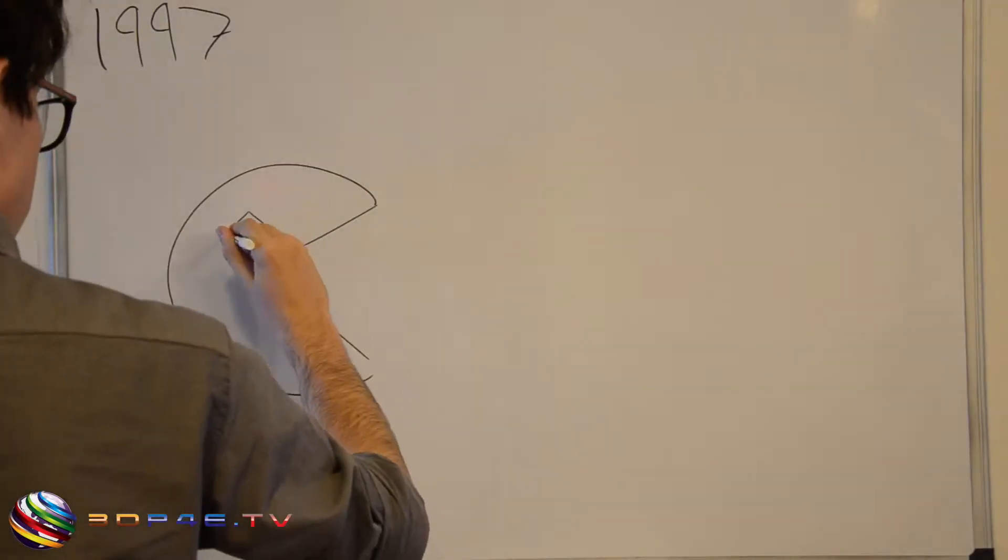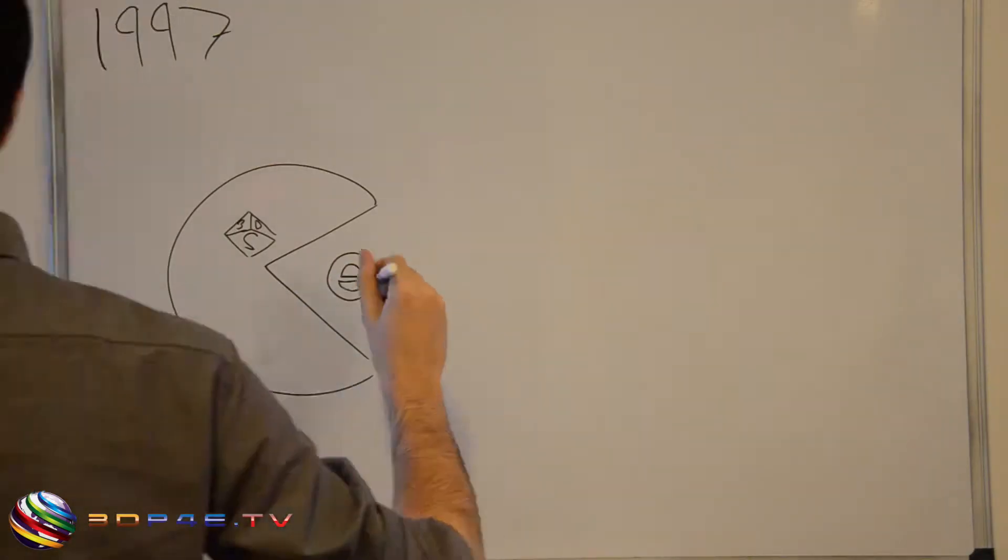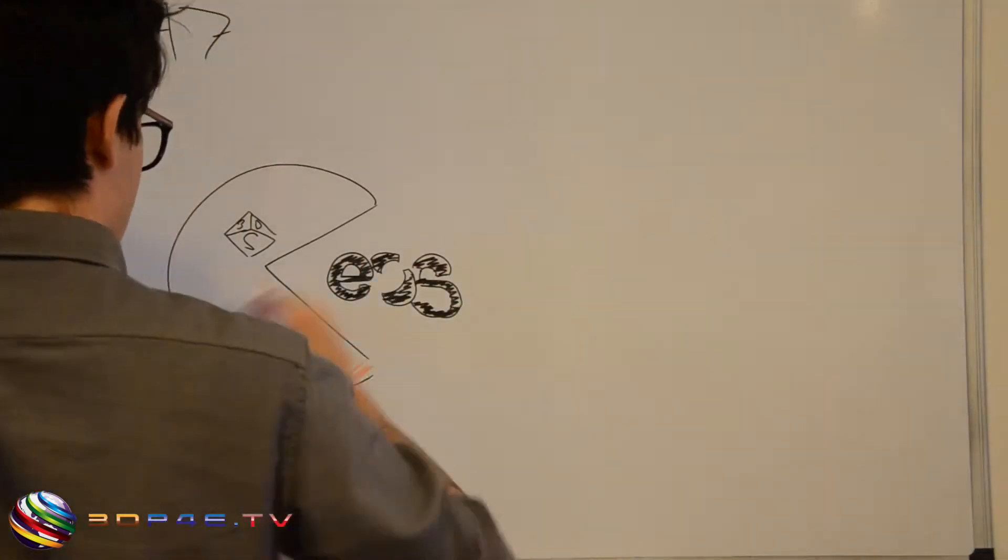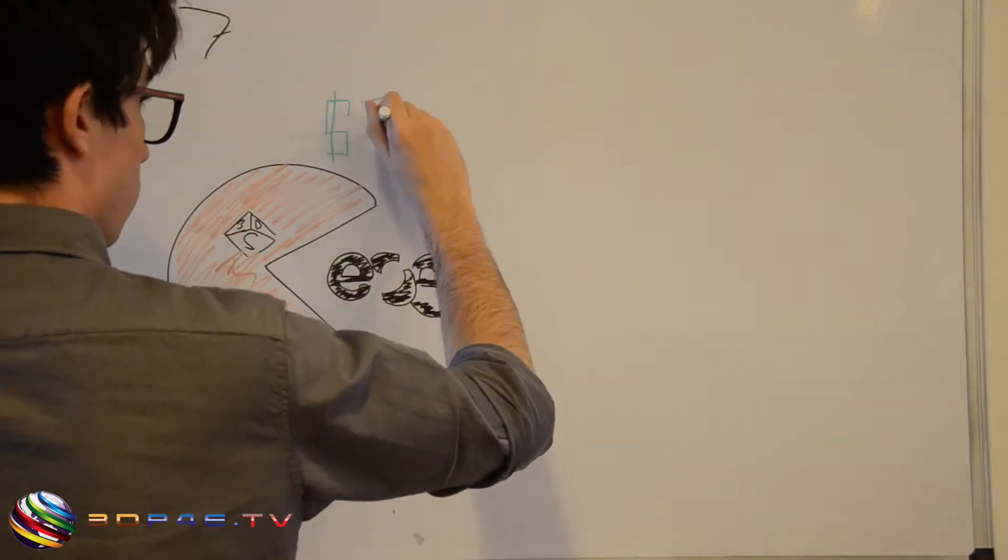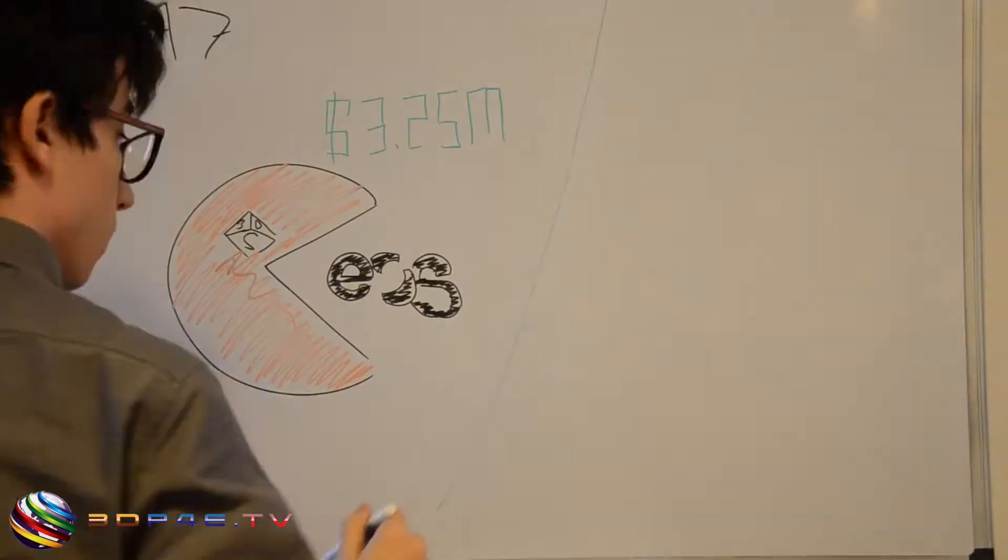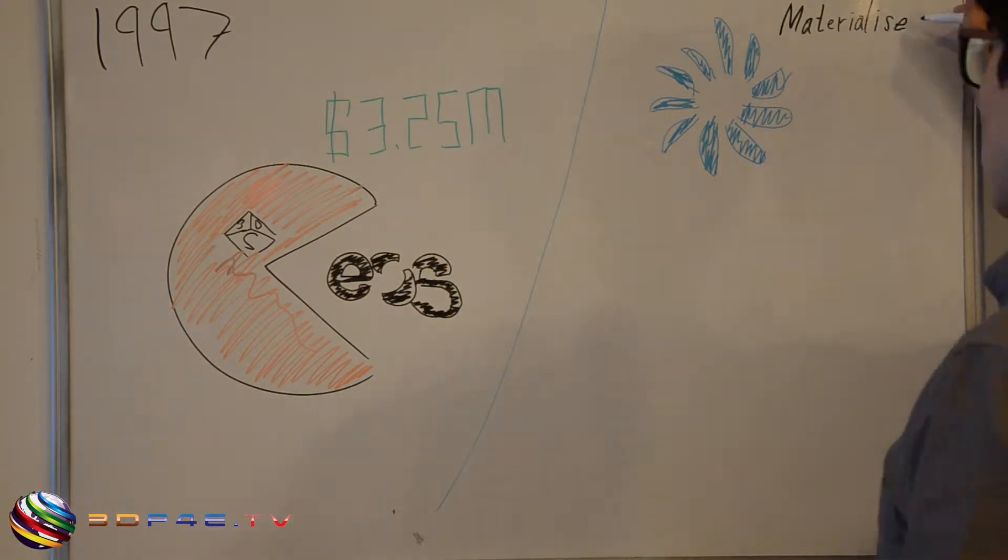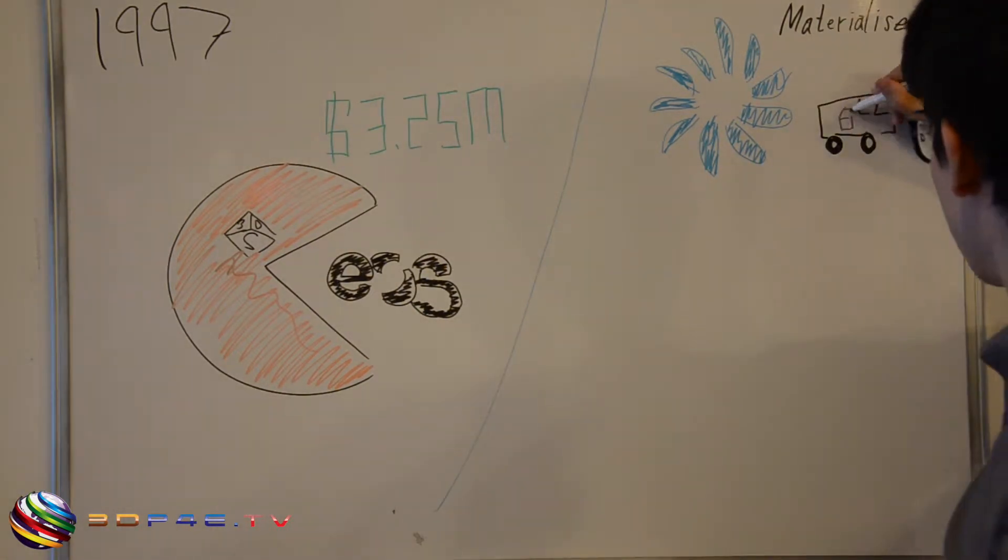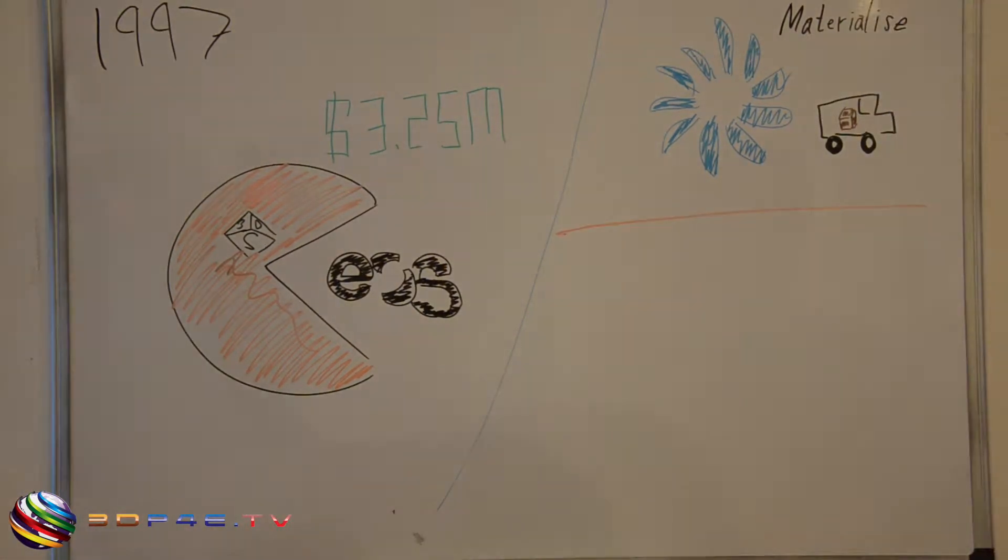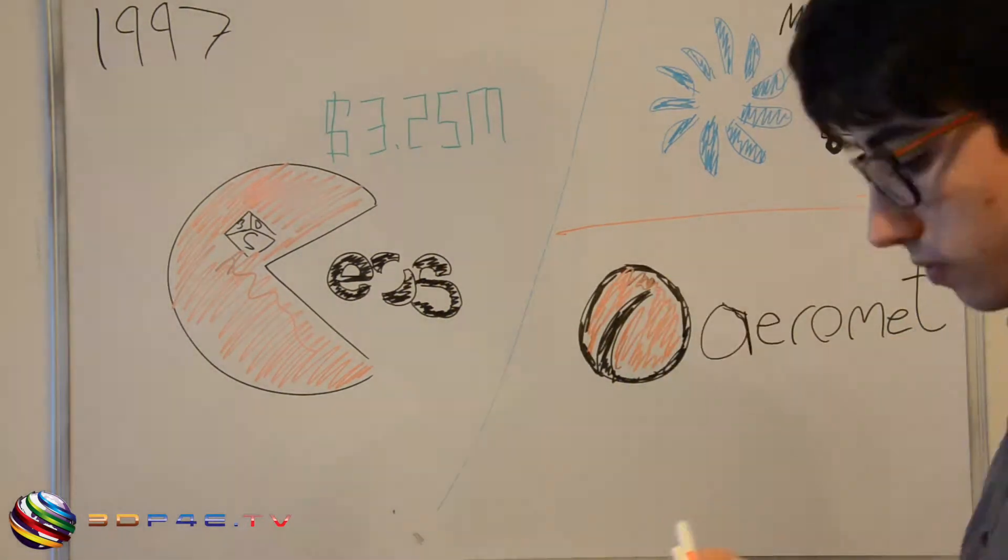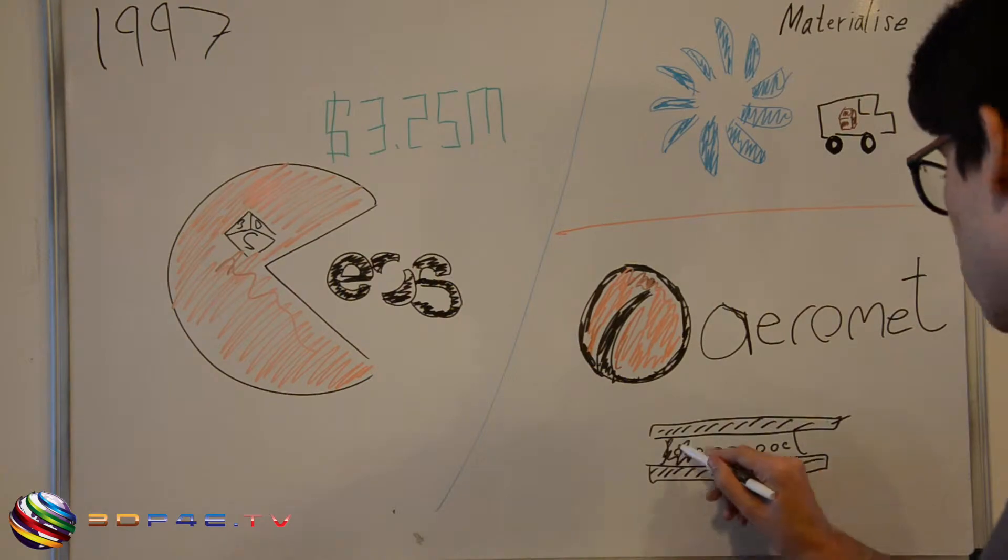But 3D Systems' habit of buying other companies begins long before then, in 1997 when they buy a range of SLA printers from German competitor EOS for $3.25 million. Also in 1997, Materialize, the first rapid prototyping service started by Wilfred Vankren seven years prior, introduces an online service that provides next day prints. We also get the first printer that works in metal, using laser additive manufacturing provided by Aeromet.